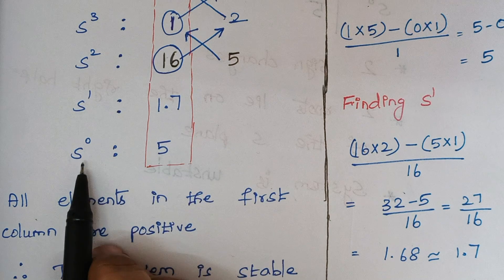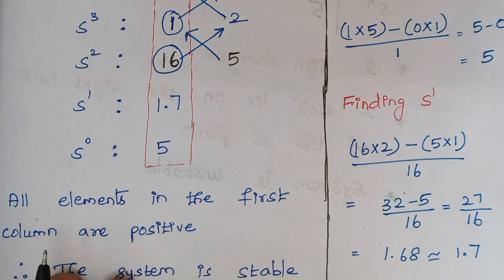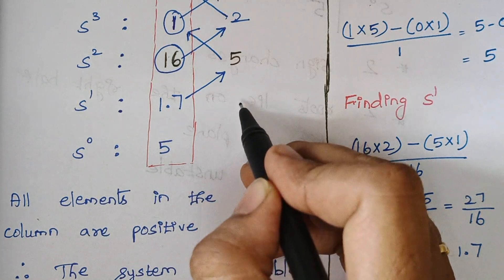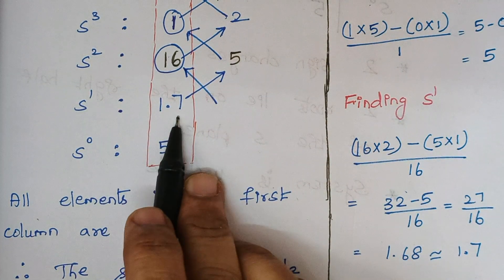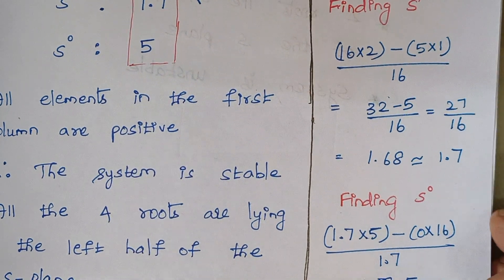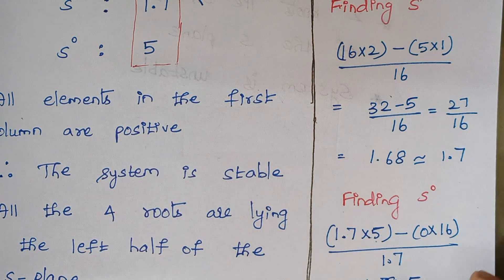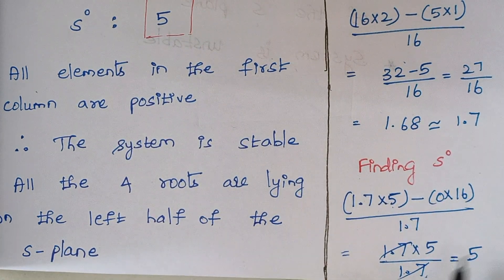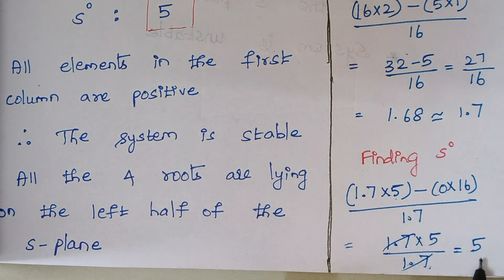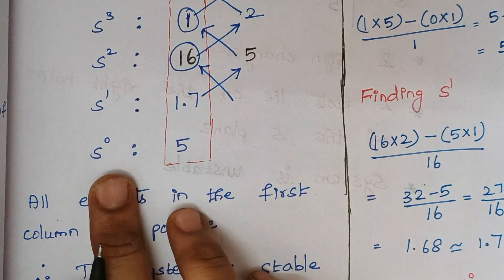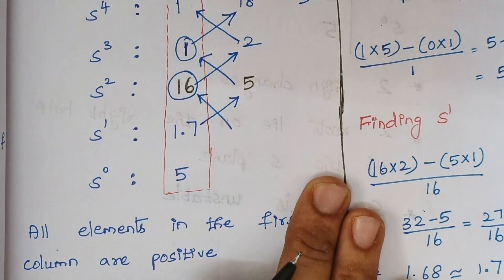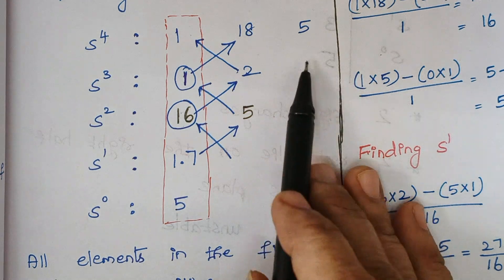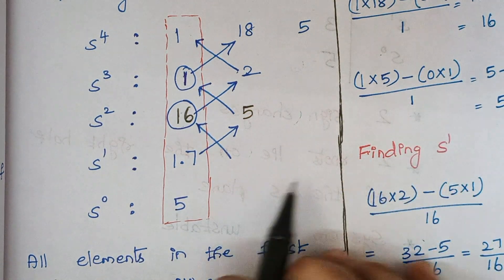Next we find S⁰. Using the same procedure: 1.7 multiplied by 5, minus 0 multiplied by 16, divided by 1.7 — that is (1.7×5 − 0×16) / 1.7. The 1.7 cancels and the answer is 5. So the S⁰ value is 5.